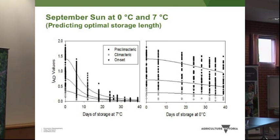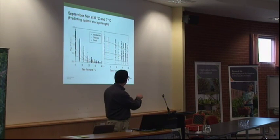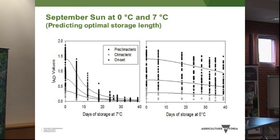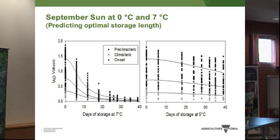We also did post-harvest studies at different temperatures. This shows how the IAD develops over up to 40 days in post harvest at two temperatures — 0°C and 7°C. They look very different in behavior, but we discovered it is actually the same curve; it's just a matter of understanding the temperature effect on the parameters. It is still variety dependent since each variety has different flesh. Understanding this allows us to infer how long you can store fruit at a certain temperature.